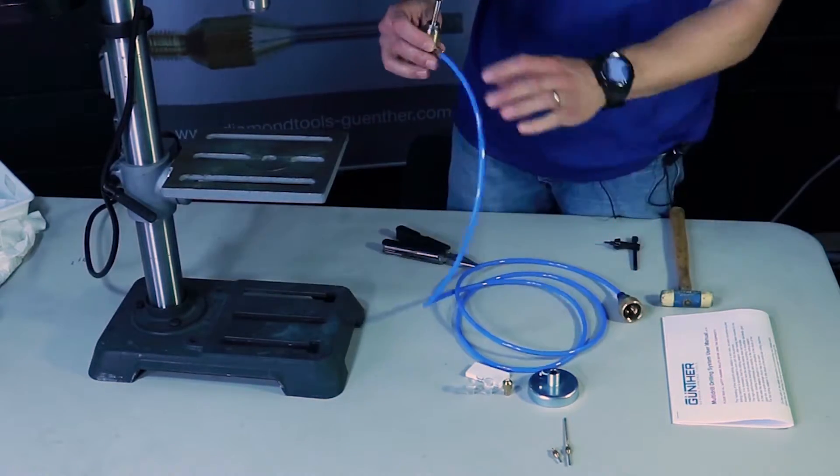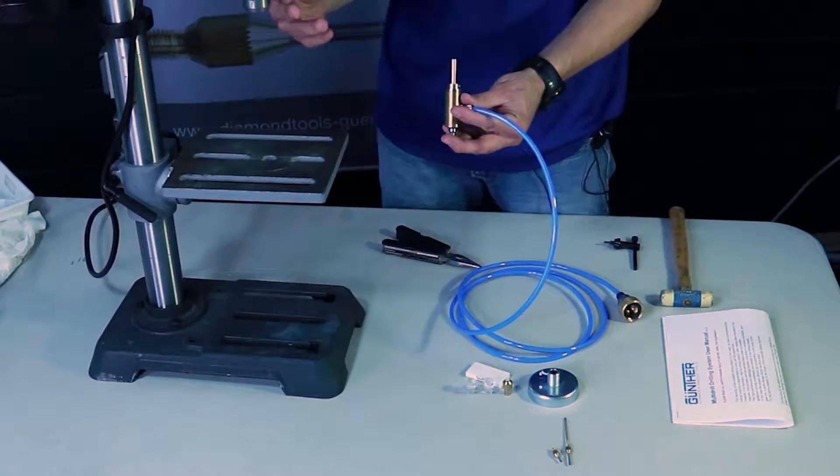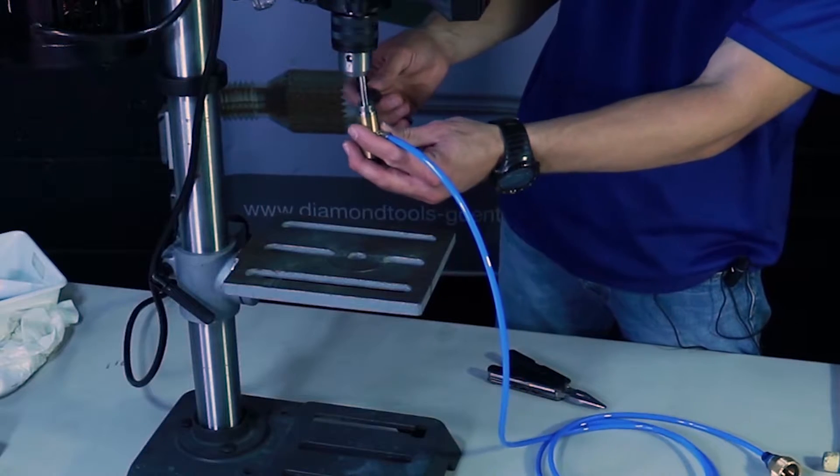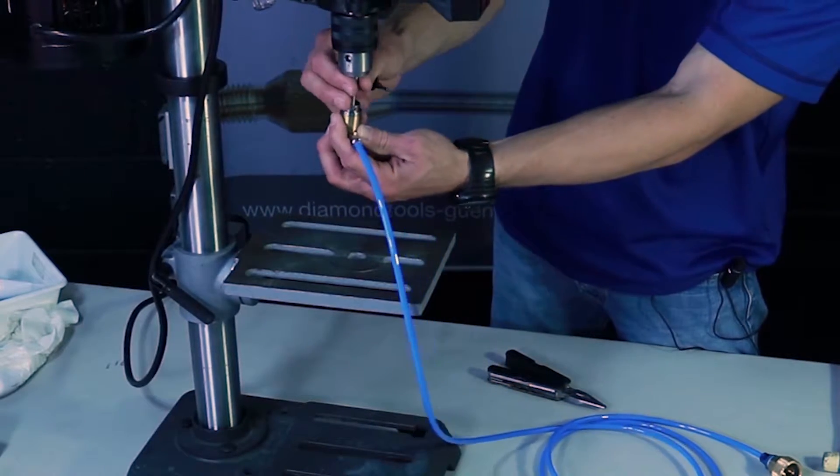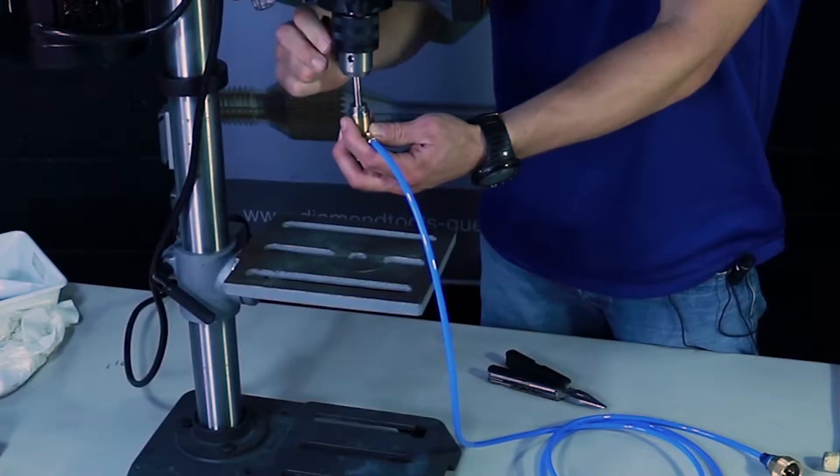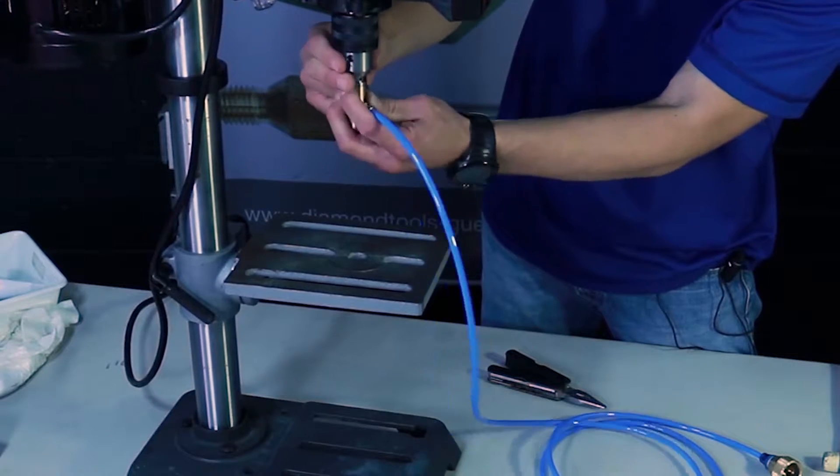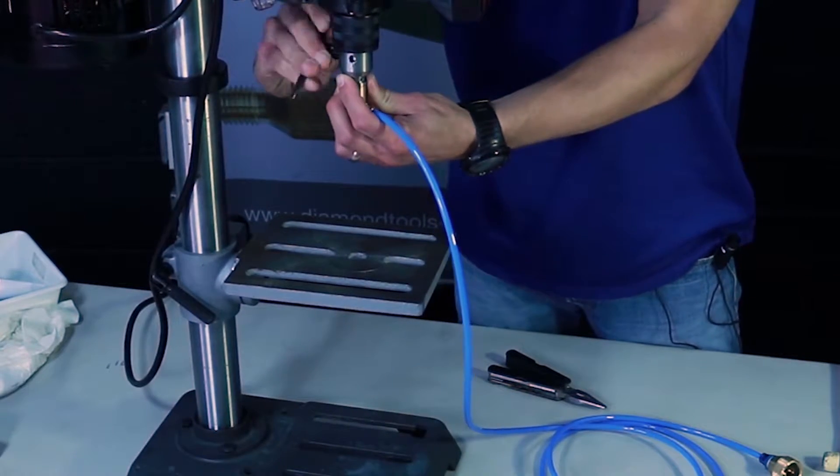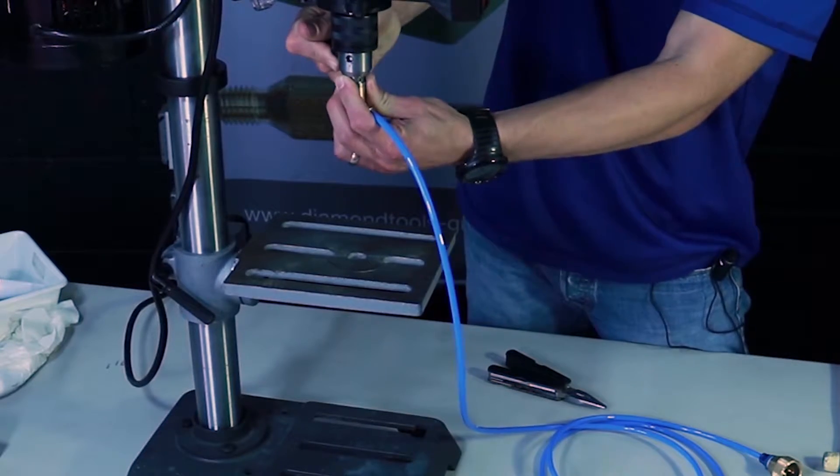Next I take my drilling spindle and insert it into the chuck. This just goes in like any drill bit would. Get it all the way in there and tighten it down nice and snug just like a regular drill bit would be.